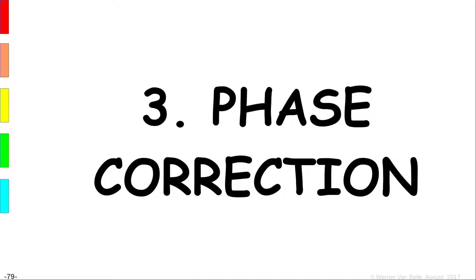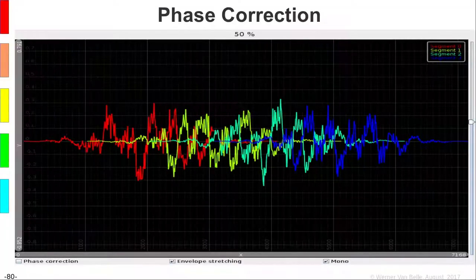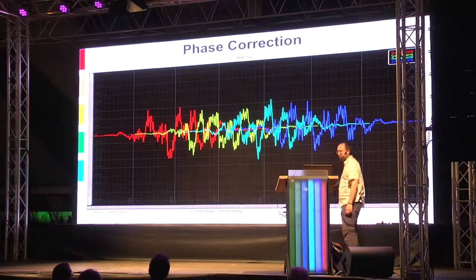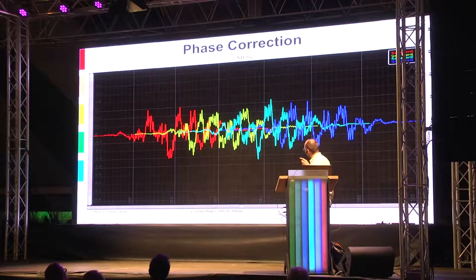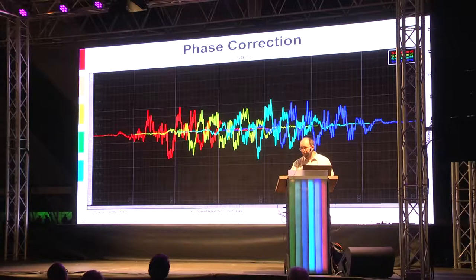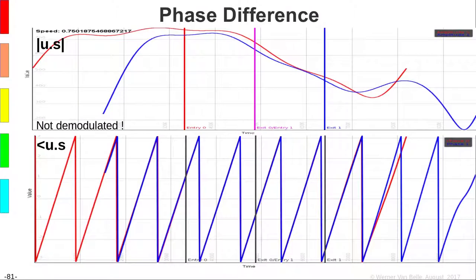That didn't sound too well — the reason is that you have to correct the phases. The problem is that without phase correction, one segment goes in the opposite direction of the previous one, so phases are not in alignment — actually entirely opposite. This means the sound will cancel itself out at certain frequencies.